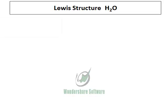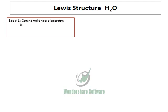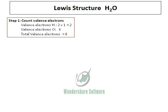Let's do the Lewis structure for water. In order to do the loose structure, the first thing we do is to calculate the valence electrons. We get 2 valence electrons from the 2 hydrogens and 6 valence electrons from oxygen, giving a total valence electron count. You know how to calculate valence electrons — it is basically the group number.